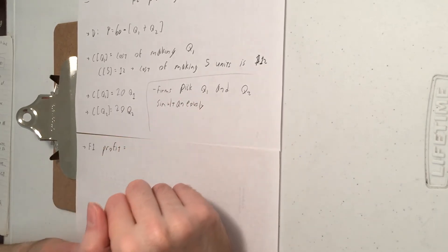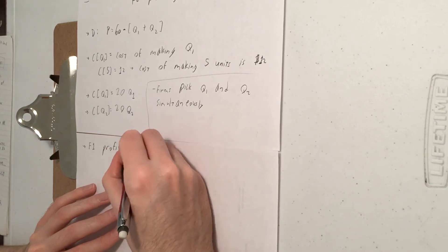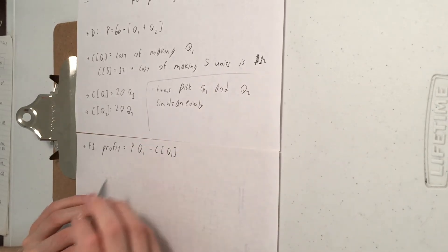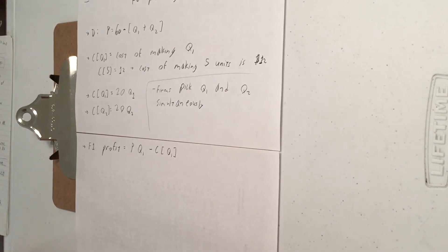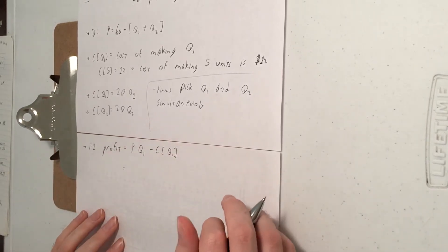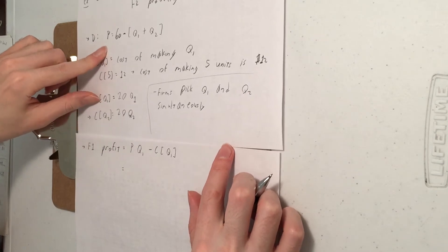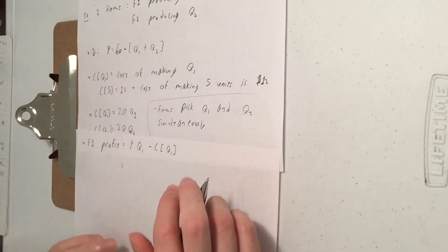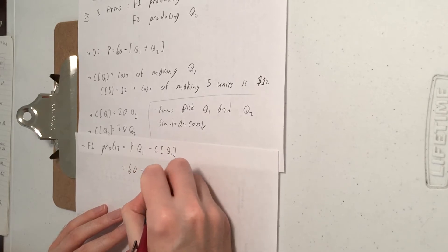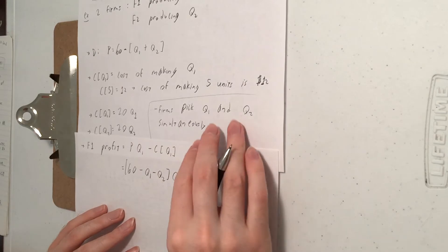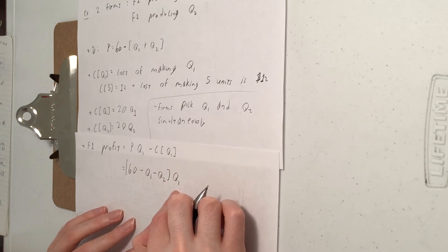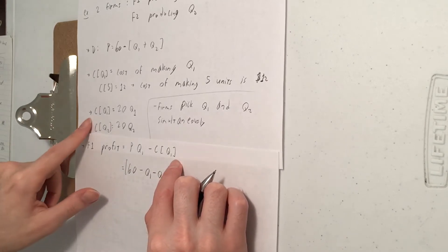So we know that profit is going to be revenue minus costs. Revenue is always price times quantity. Firm makes Q1 units so their quantity is Q1. So price comes from the demand curve here. We said demand was 60 minus Q1 plus Q2. So that's price times quantity for firm one. Then we subtract off costs of Q1 and that is 20Q1.